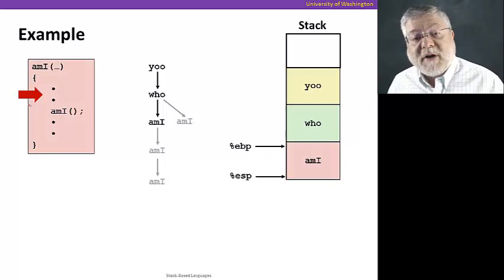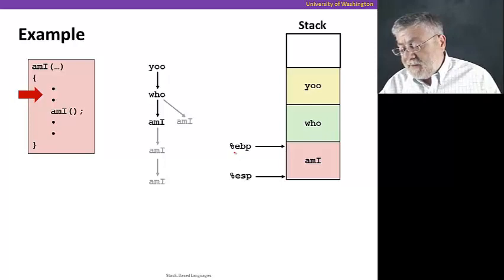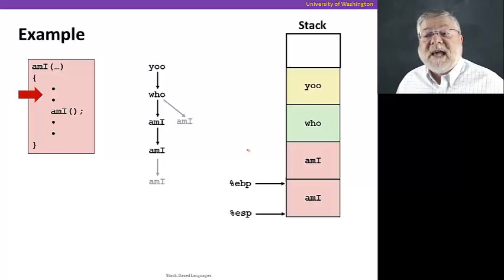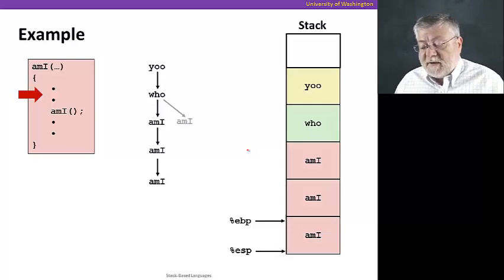Again, we've had to save that previous value of EBP that was there, because we had to change that again. So we've had to find a place to put that. We're gonna go along and execute mi now, and it's gonna call itself. So we're gonna see another stack frame from mi appear on the stack, again with updated pointers.